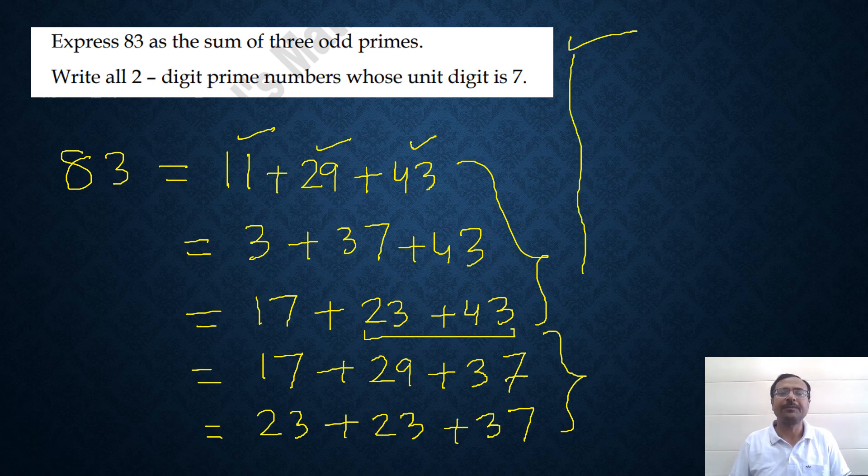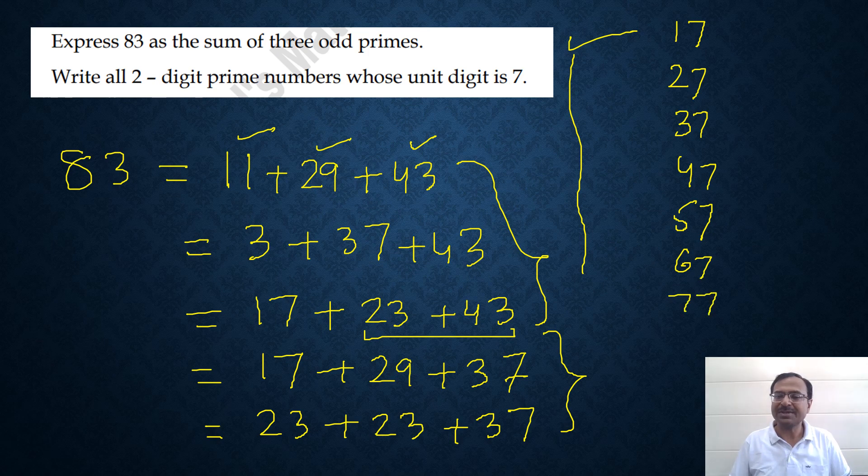Let's see the last one. Write all two-digit prime numbers whose unit digit is 7. So all two-digit numbers whose unit digit is 7 - they start with 17, 27, 37, 47. I am writing everything, and then we will strike off whichever are not prime. So 57, 67, 77, 87, and 97. These are all two-digit numbers ending in 7.